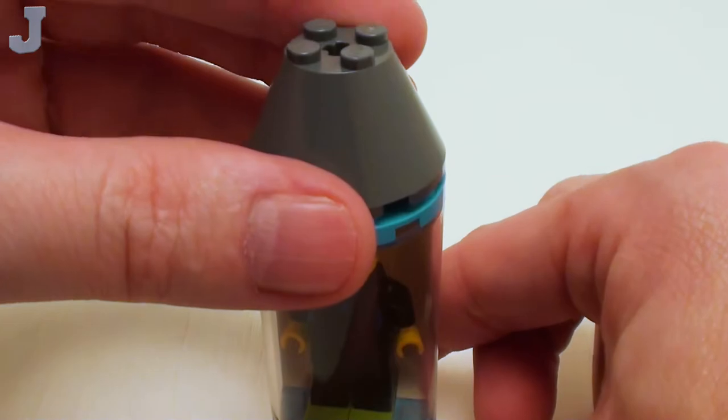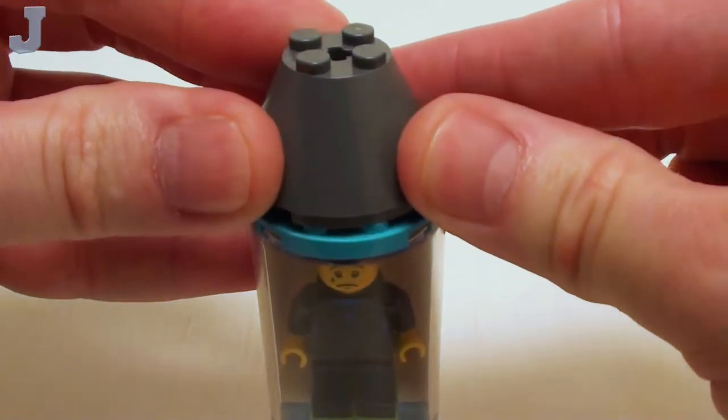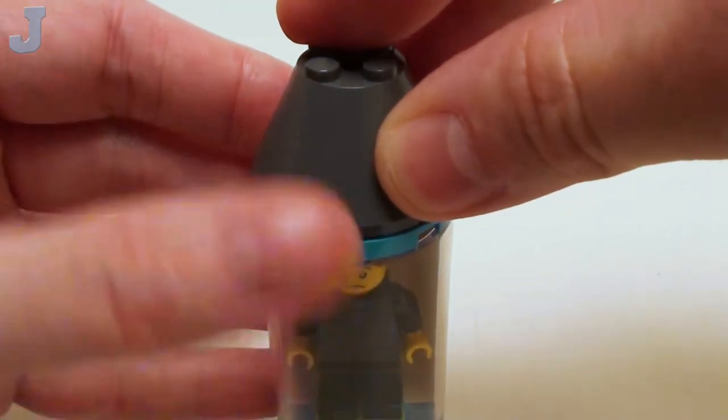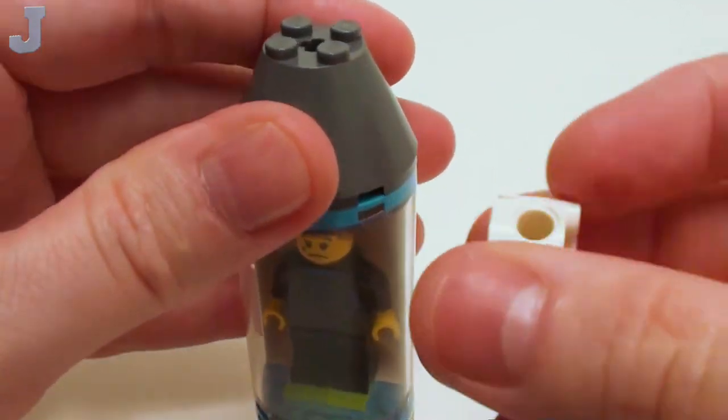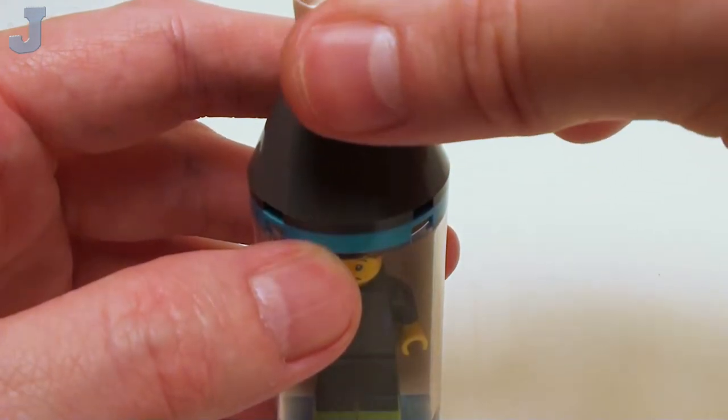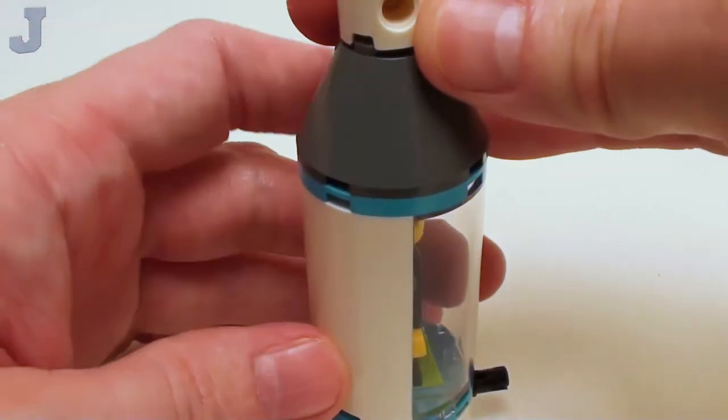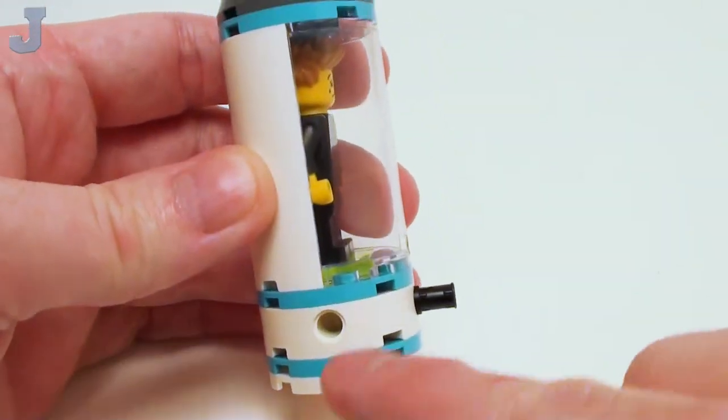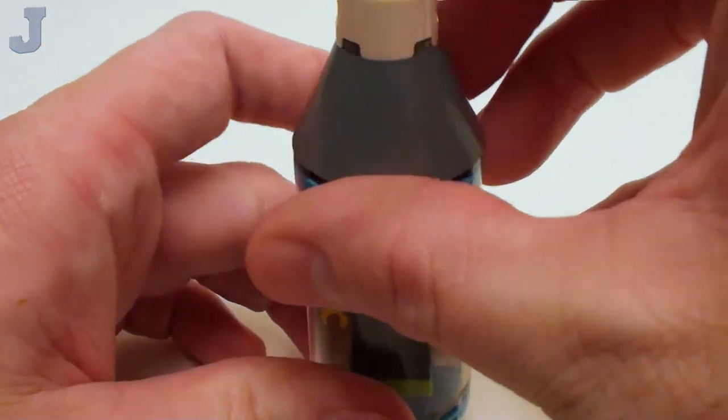Next, a 4 by 4 by 2 nose cone. Set that right on top. And a 2 by 2 round brick with two technic hose. Now I want the technic hose on this side. Let these both line up. And I want to crown this off with a 2 by 2 flat tile.